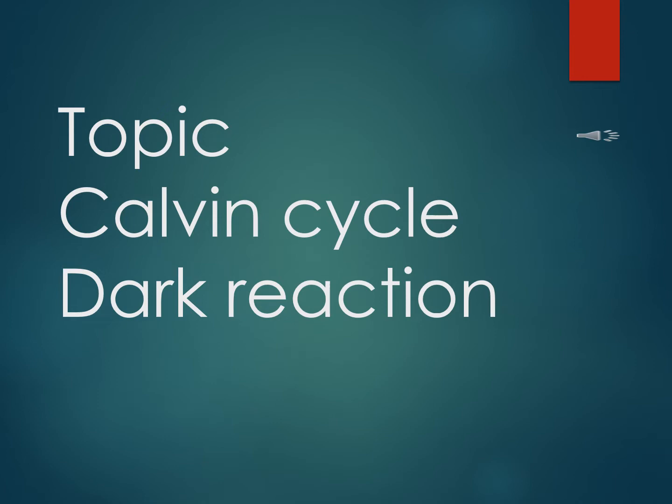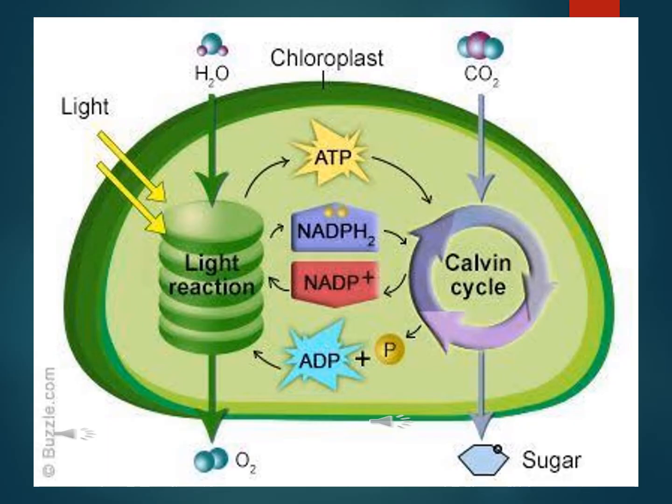Today we will learn about the detailed mechanism of dark reaction. Both light reaction and dark reaction are occurring inside the chloroplast. Light reaction is occurring in the thylakoid membrane, and dark reaction is occurring in the stroma of the chloroplast. Dark reaction is also called the Calvin cycle or light-independent reaction. This Calvin cycle uses carbon dioxide and produces glucose.